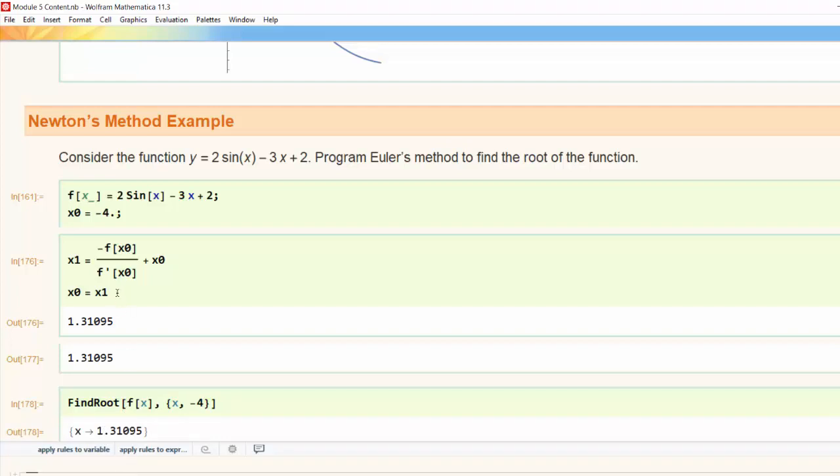So it looks like just by rerunning the cell I've implemented Newton's method. Now of course in general I don't want to have to put my cursor into a cell and hit shift enter over and over again. So how can I really trim that up and make it more code-like?